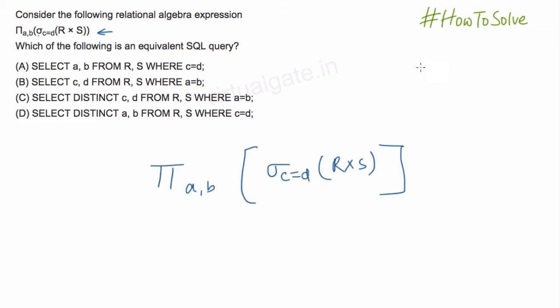For example, if we have relation R with attribute A, B, C and we have S with attribute let's say D, E and F. So what we will have after taking this cross product, we will get an intermediate relation R cross S which will have A, B, C, D, E, F.